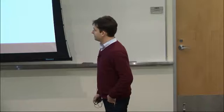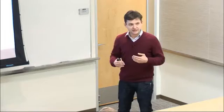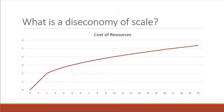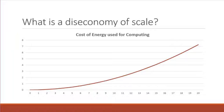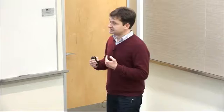Let me start by defining what problems with diseconomy of scale are and why they're important. Typically when you buy resources, you pay a price which is linear in the amount of resources used. In some cases you may get a discount if you buy more. But in some interesting cases, the price goes super-linearly — if you buy twice as many resources, you pay more than twice the amount of money.